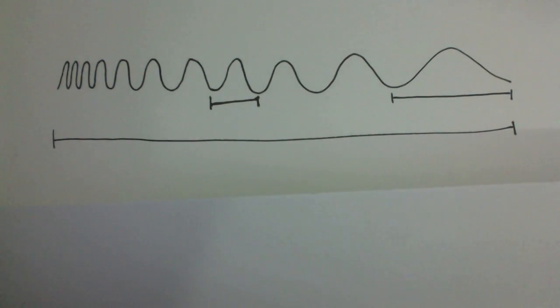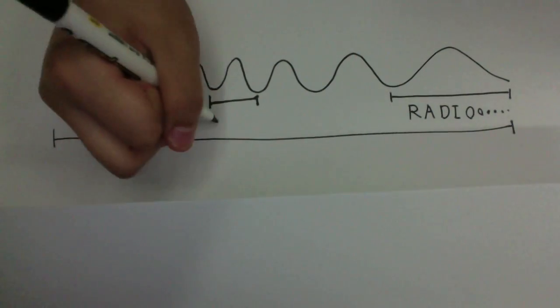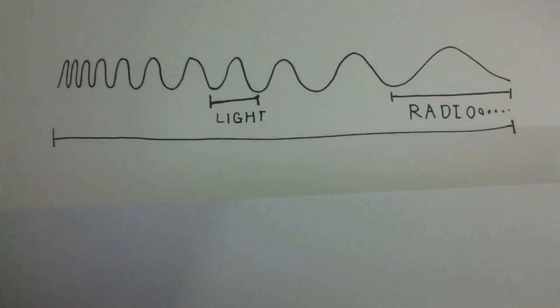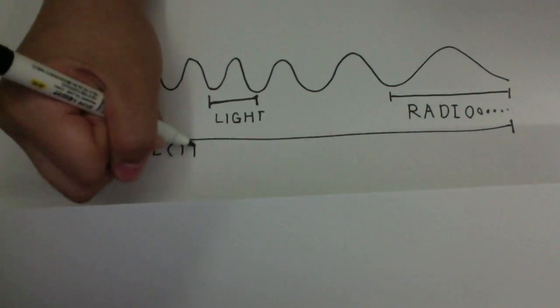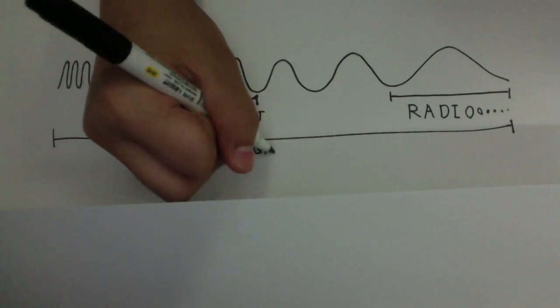But what about radio waves and light waves? How come they can travel through space? Radio waves and light waves are not mechanical waves, but electromagnetic waves, or light. Light does not need air to travel and can propagate through a vacuum, unlike sound, which cannot travel without a medium.